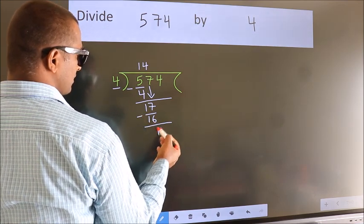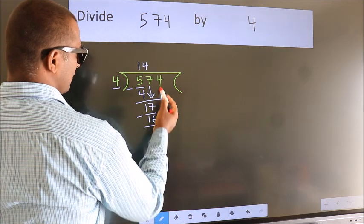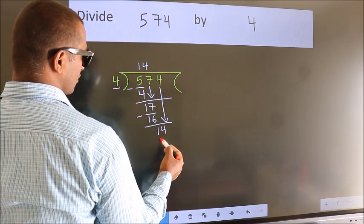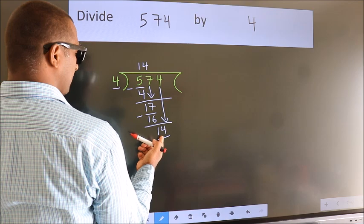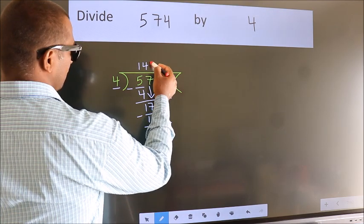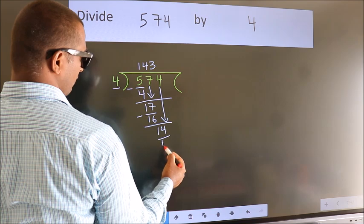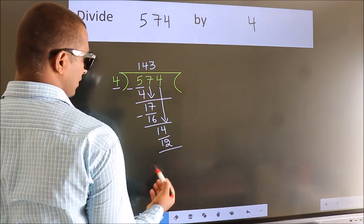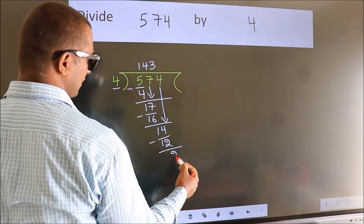After this, bring down the beside number. So 4 down. So 14. A number close to 14 in the 4 table is 4 threes 12. Now we subtract. We get 2.